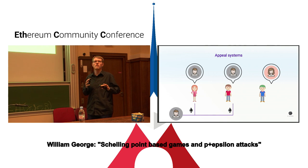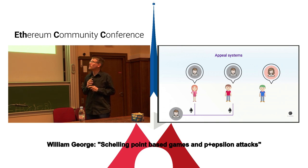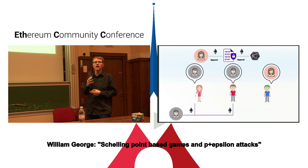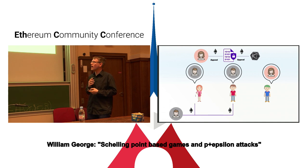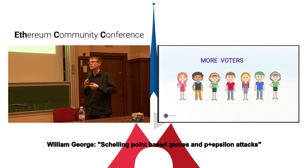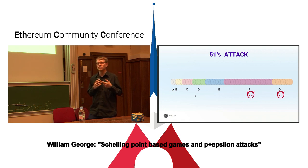That's what we knew before as of Vitalik's 2015 blog post. Now I'll talk about a defense — or at least a partial defense. In Kleros, we use an appeal system. The basic idea is that if Bob tries to bribe, say, two of three jurors, Alice can ask for an appeal, put in an additional deposit, and the Kleros system will draw more jurors to rule on the case. Because there are more jurors, it becomes harder for Bob to bribe all of them, so it becomes less sustainable for Bob to maintain an attack as the voter pool grows.